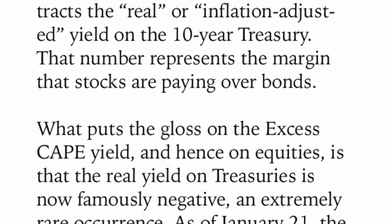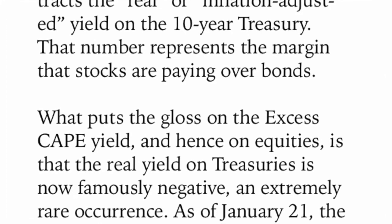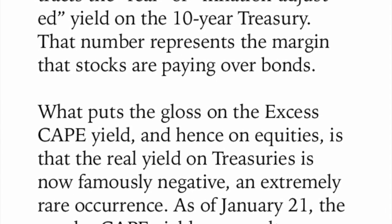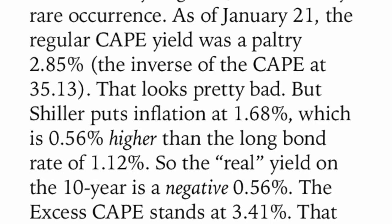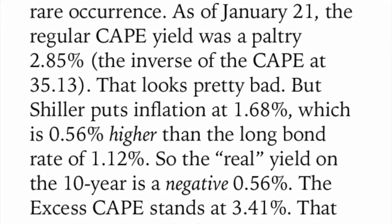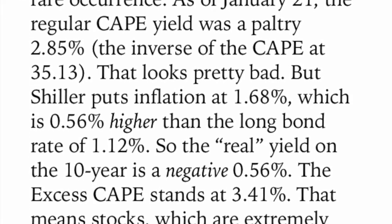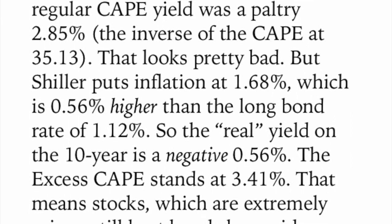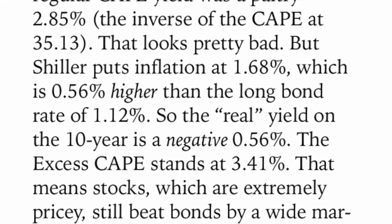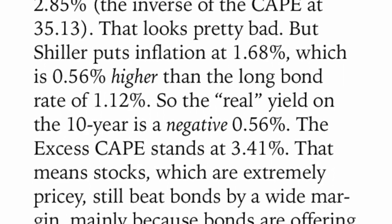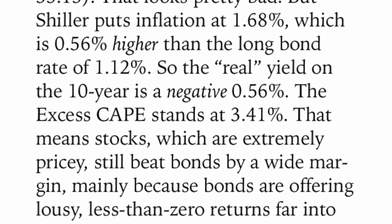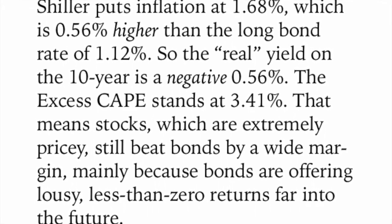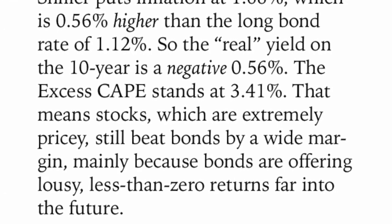What puts the gloss on the Excess CAPE Yield is that the real yield on Treasuries is now famously negative — an extremely rare occurrence. Remember, they're talking about the real yield. You have your nominal yield from your bond, and then you subtract inflation. Say I get a 1% yield on my bond and subtract 1.5% for inflation — my real yield is going to be negative 0.5%. So it is an extremely rare occurrence to have real negative yields.